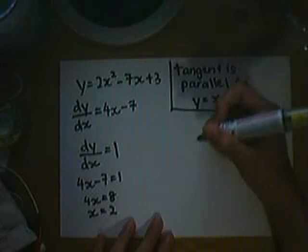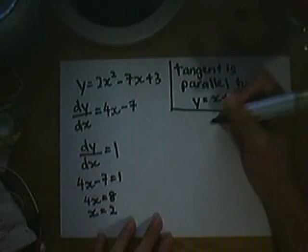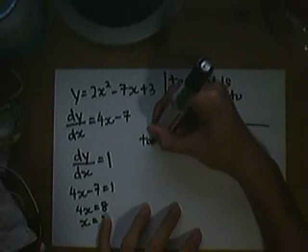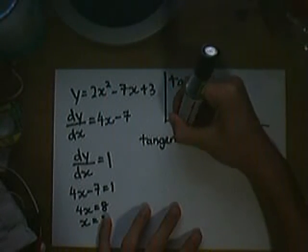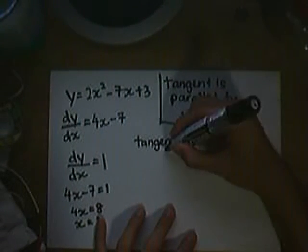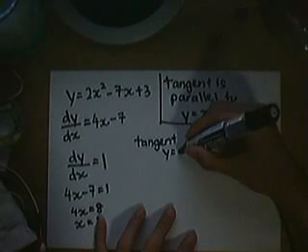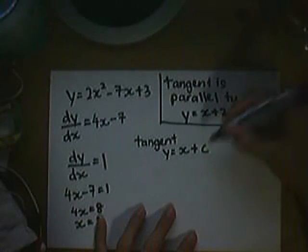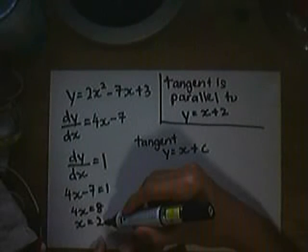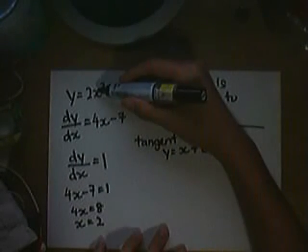Now we have to find the equation of the tangent. As you already know, the tangent is parallel to this. Therefore, it will be y equals x plus c. As you already know this, we can find the y value.